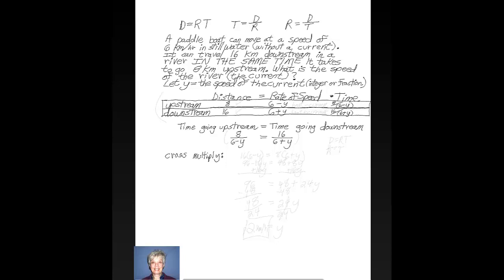Okay, so we're going to set up our table again. Distance equals rate of speed times time. Then you're going to have an upstream row and a downstream row, and you're just going to put your information in from the story problem.